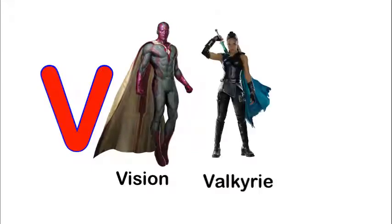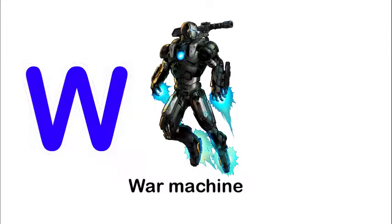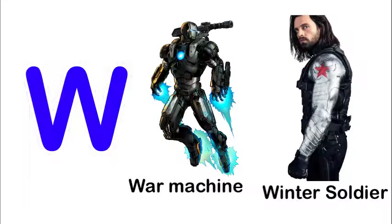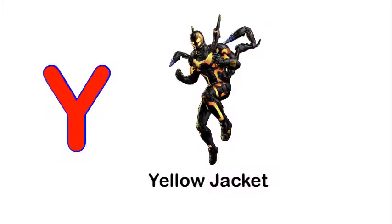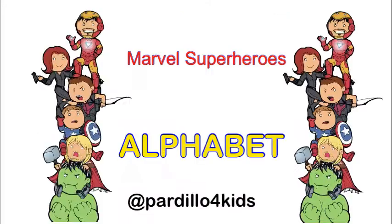V is for Vision, Valkyrie, and Venom. W is for War Machine and Winter Soldier. X is for X-Men. Y is for Yellow Jacket. Z is for Zemo. And that's the superhero alphabet.